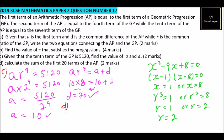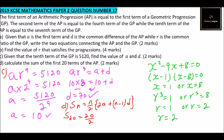We now look at Part D, which asks us to calculate the sum of the first 20 terms of the AP. The formula for the sum of n terms of an AP is Sₙ = n/2 × [2a + (n−1)d]. For the first 20 terms, n = 20, so S₂₀ = 20/2 × [2(10) + (20−1)(70)] = 10 × [20 + 19 × 70].